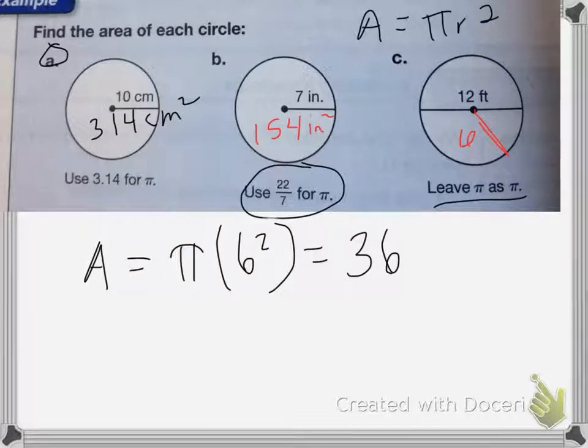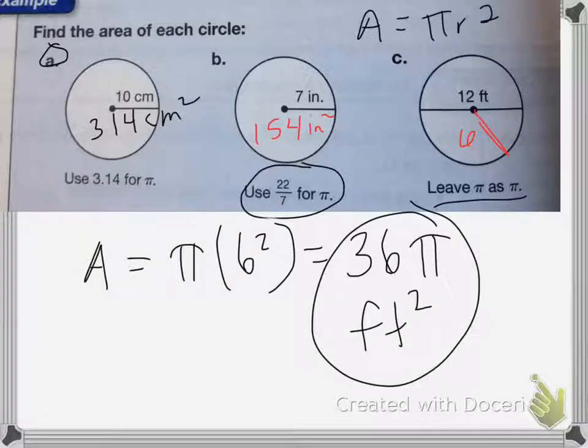the answer is going to be 36 pi feet squared for my answer. And that's it for this lesson.